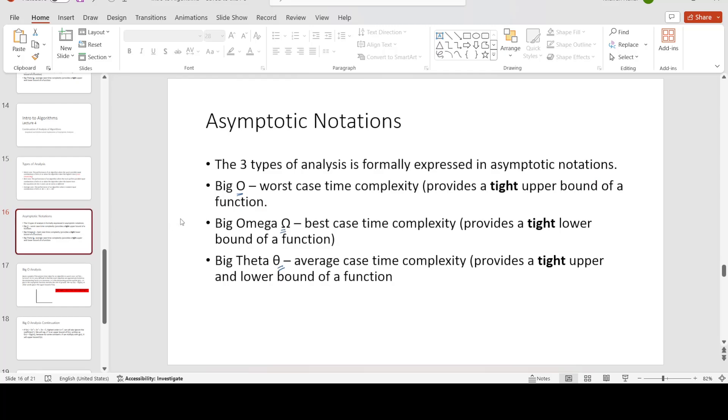And we know that the exact time complexity is difficult to find and also unnecessary. So what we do is we approximate, which we call asymptotic. Now, asymptotic functions are formally expressed as asymptotic notations by Big O, Big Omega, and Big Theta. Big O is worst case time complexity, Big Omega for best time complexity, and Big Theta for average time complexity.